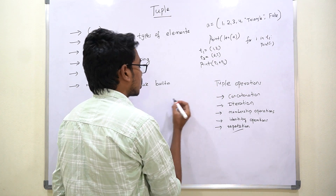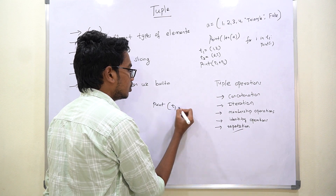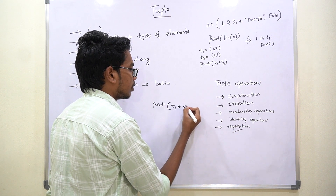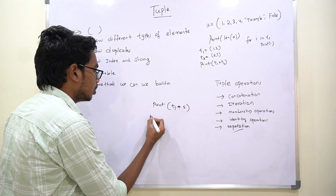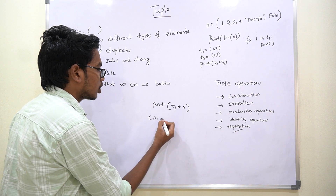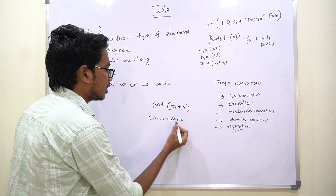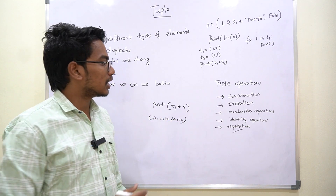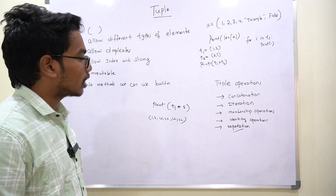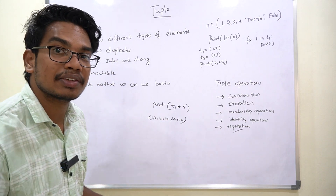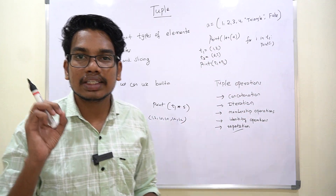Repetition — for example: print(t1 * 5) — this will repeat the elements of the tuple five times, giving you one, two repeated five times. That's all for the theory.